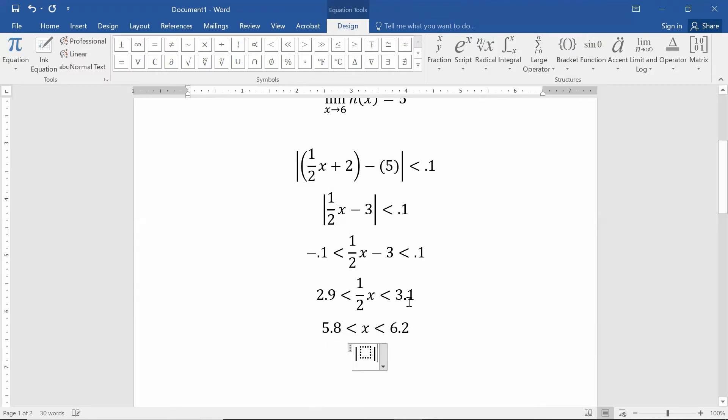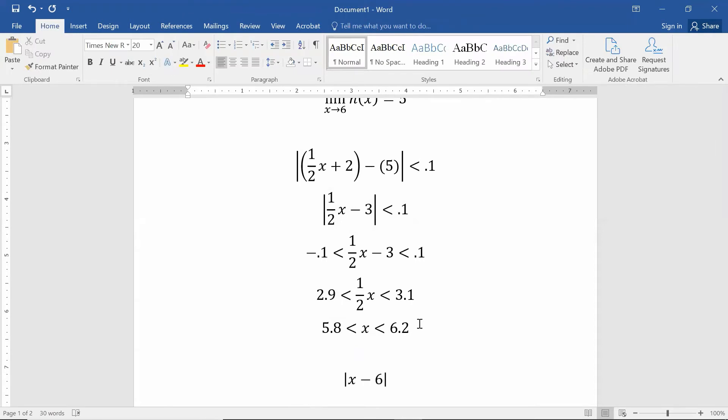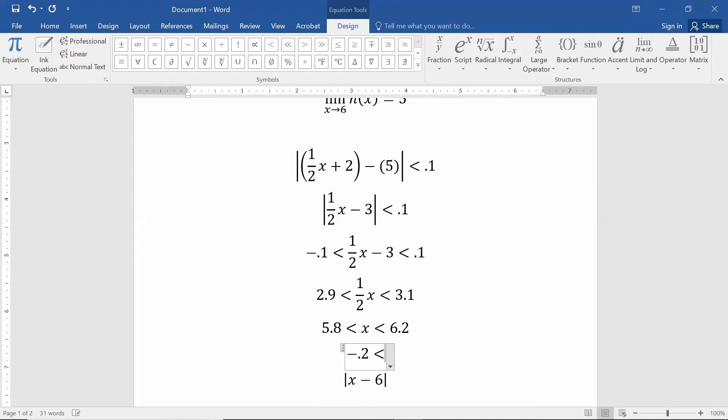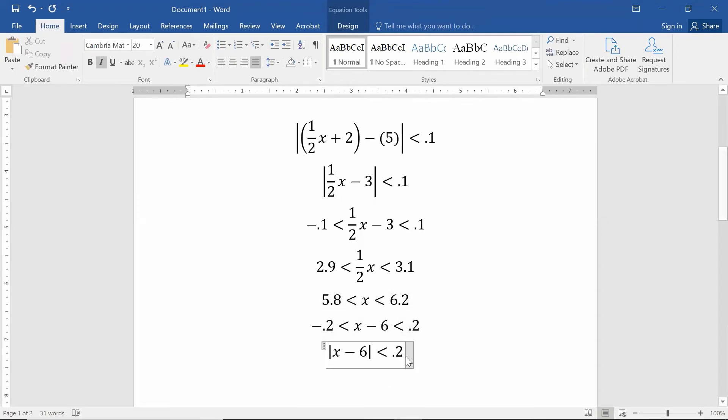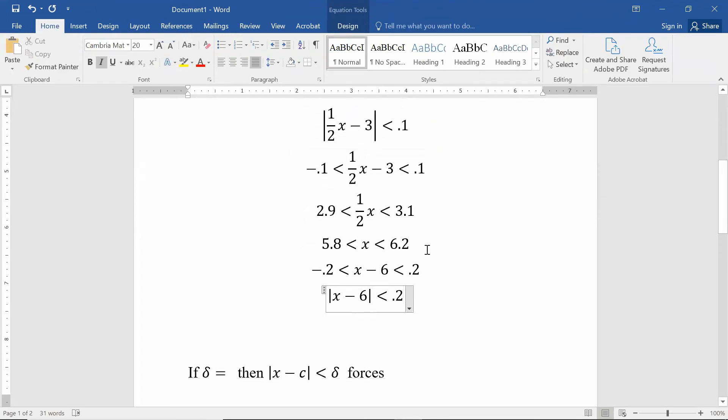In fact, let's just jump right into the absolute values. If I subtracted 6 from all three sides, I would figure out that x - 6 had to be between negative 0.2 and positive 0.2. This means if the absolute value of |x - 6| is less than 0.2, that is going to be equivalent to saying the output minus 5 is less than 0.1.